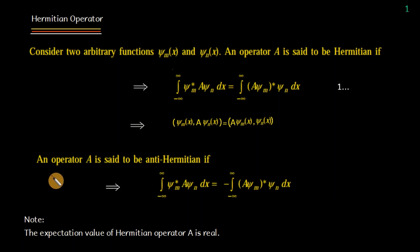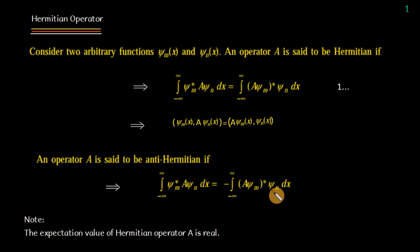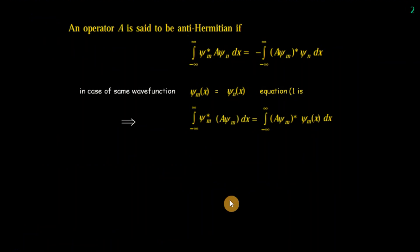Similarly, an operator A is said to be an anti-Hermitian operator if it satisfies this condition: ⟨psi_m* | A | psi_n⟩ = −⟨A psi_m | psi_n⟩*, meaning the right-hand side carries a negative sign compared to the Hermitian case.